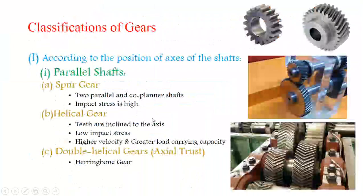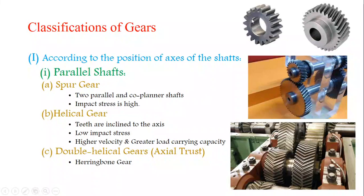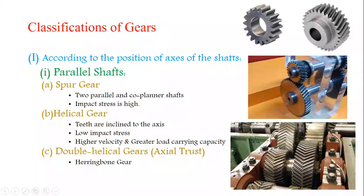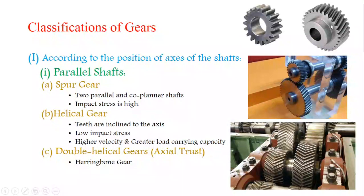The spur gear connects two parallel and co-planar shafts; in spur gear the impact stress is more. In helical gear, the teeth are inclined to the axis of the gear, whereas in spur gear the teeth are parallel to the axis of the gear. This is the key difference between spur gear and helical gear.